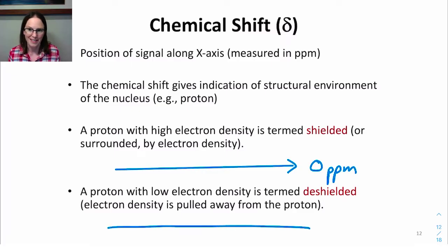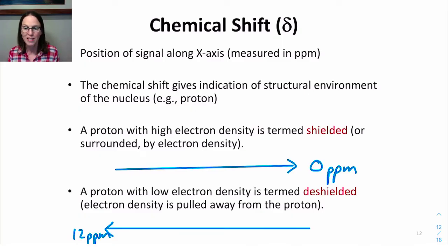Protons with lower electron density are termed deshielded, having electron density pulled away from them. The more deshielded a proton, the more its signal shifts to the left on the x-axis, or closer to 10 or 12 ppm.